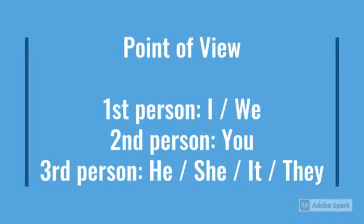Now that we have distinguished between voice and style, let's talk about the things you have to look out for when you are told to do style analysis on a text. First, you can identify the writer's point of view. Is the writer using first, second, or third person? The first person point of view uses I or we, the second uses you, and the third person uses he, she, it, or they. Normally, in formal situations, the third person point of view is used.